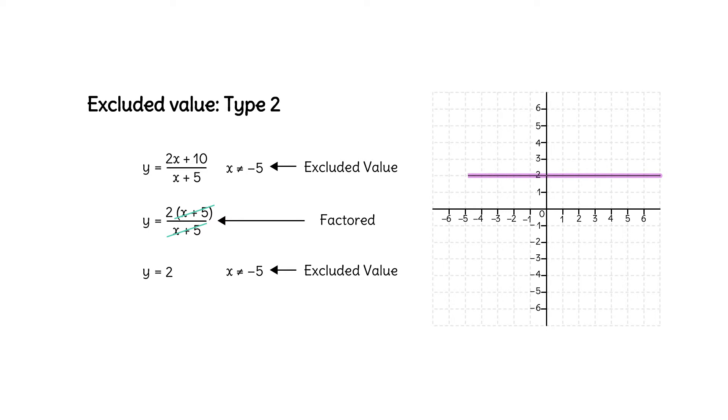The graph of y equals 2 is a horizontal line, but at the x value of negative 5 we graph a hole, an open circle, because negative 5 is an excluded value.